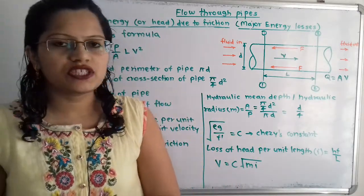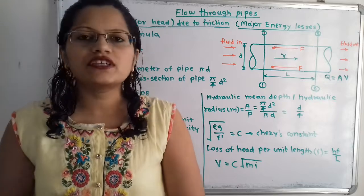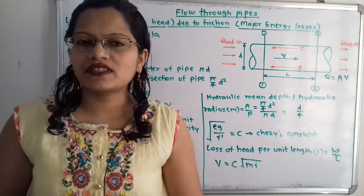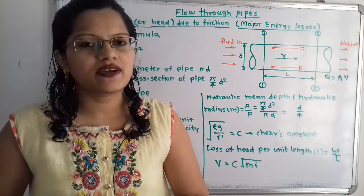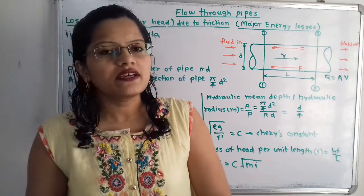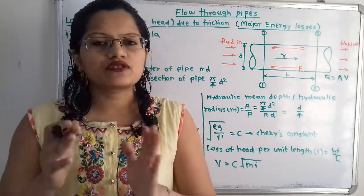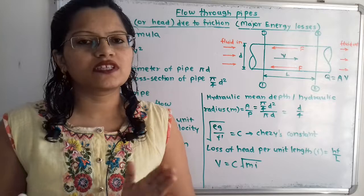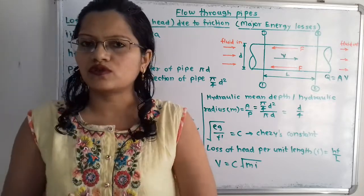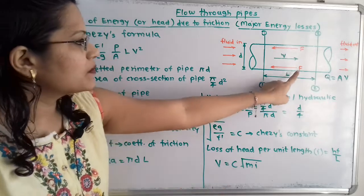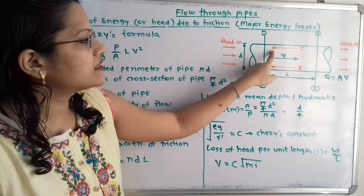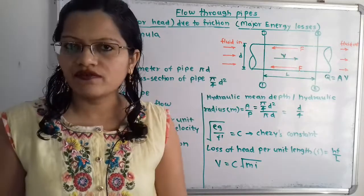Now, why is there friction? When the fluid is flowing inside the pipe, the fluid is in contact with the surface of the pipe, and that's why there is friction between the fluid and the surface of the pipe. There are losses because of this friction — we can also say there is a loss of head due to friction or loss of energy due to friction. Here, capital F represents friction, which acts in the opposite direction of the flow.